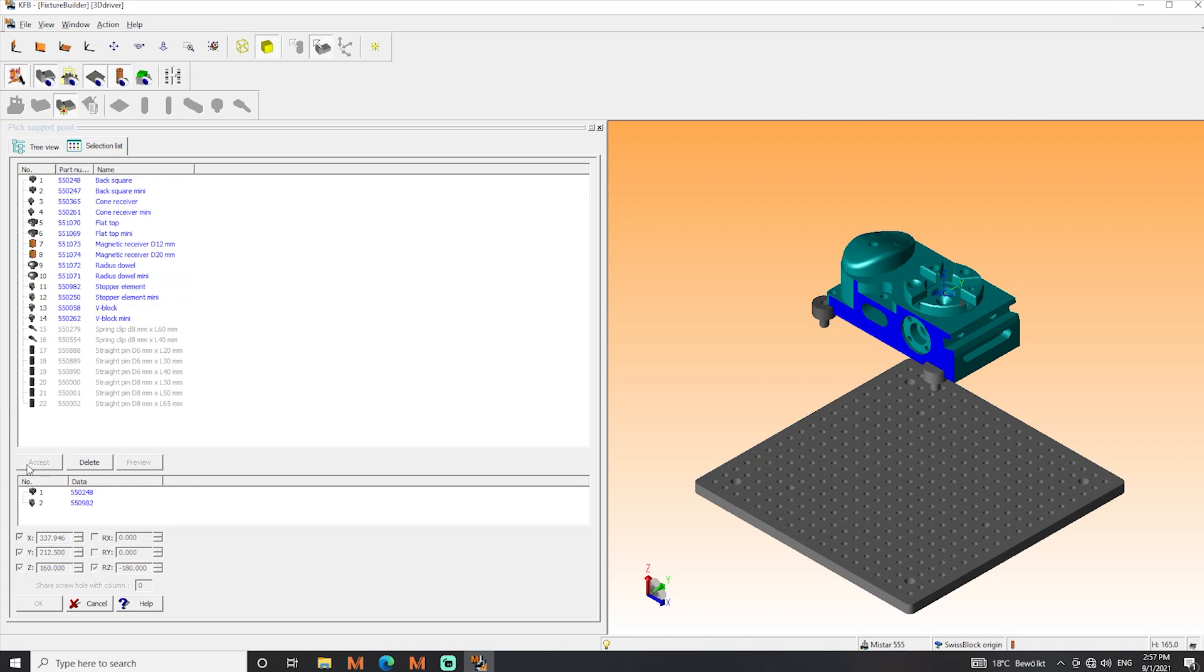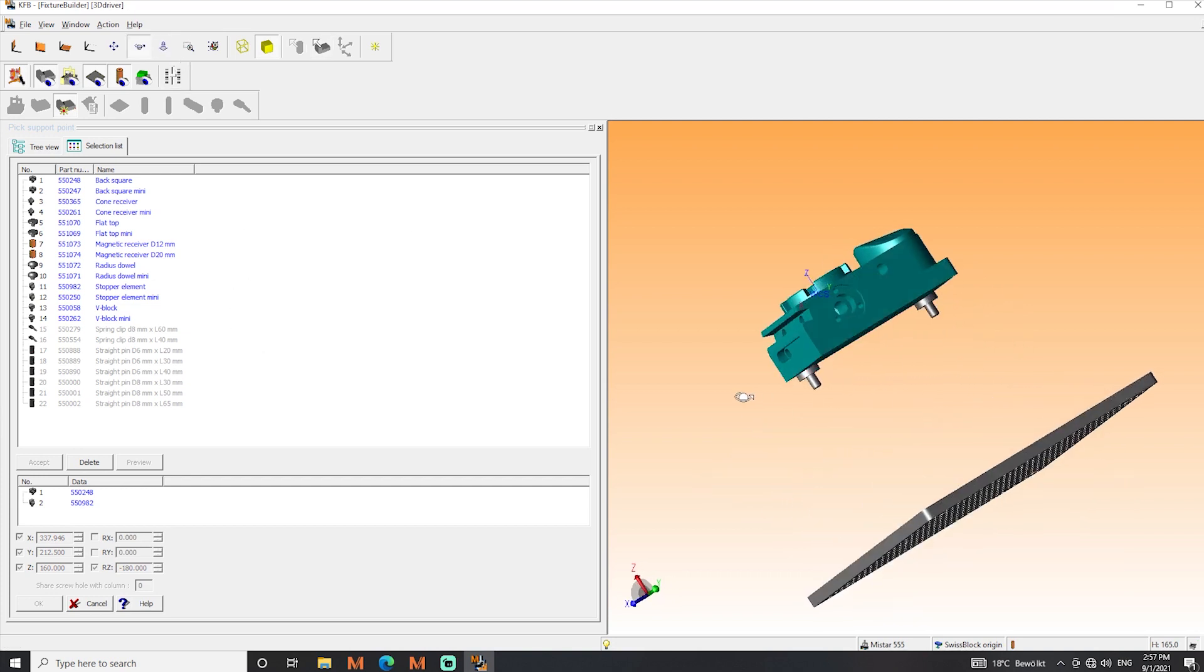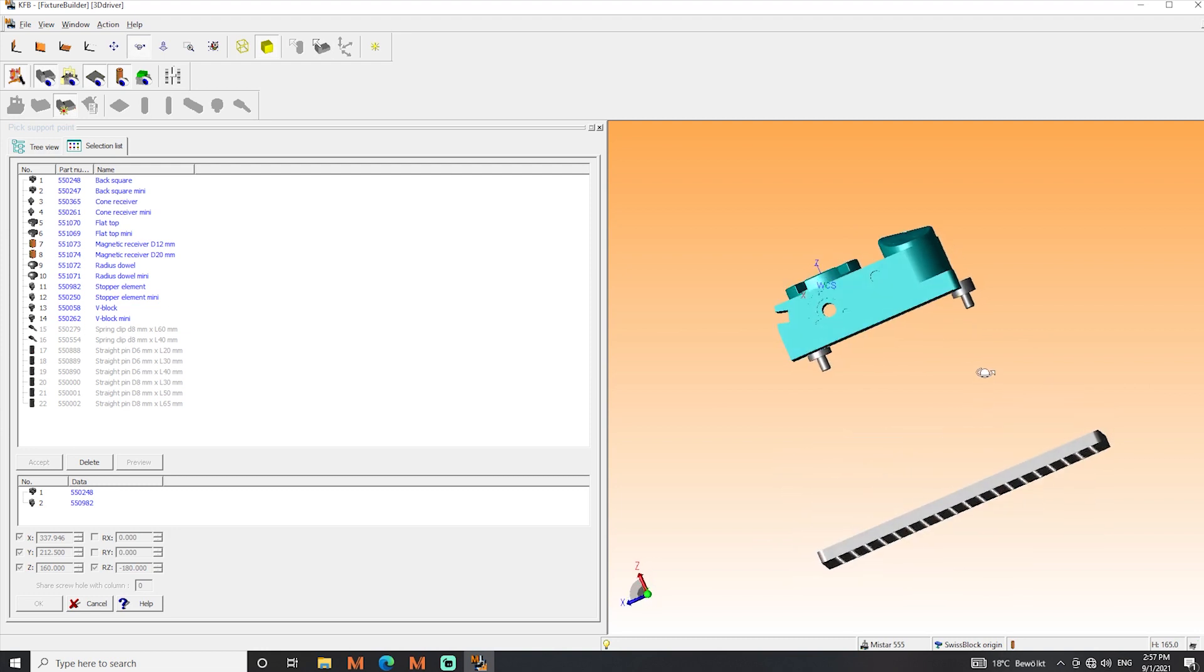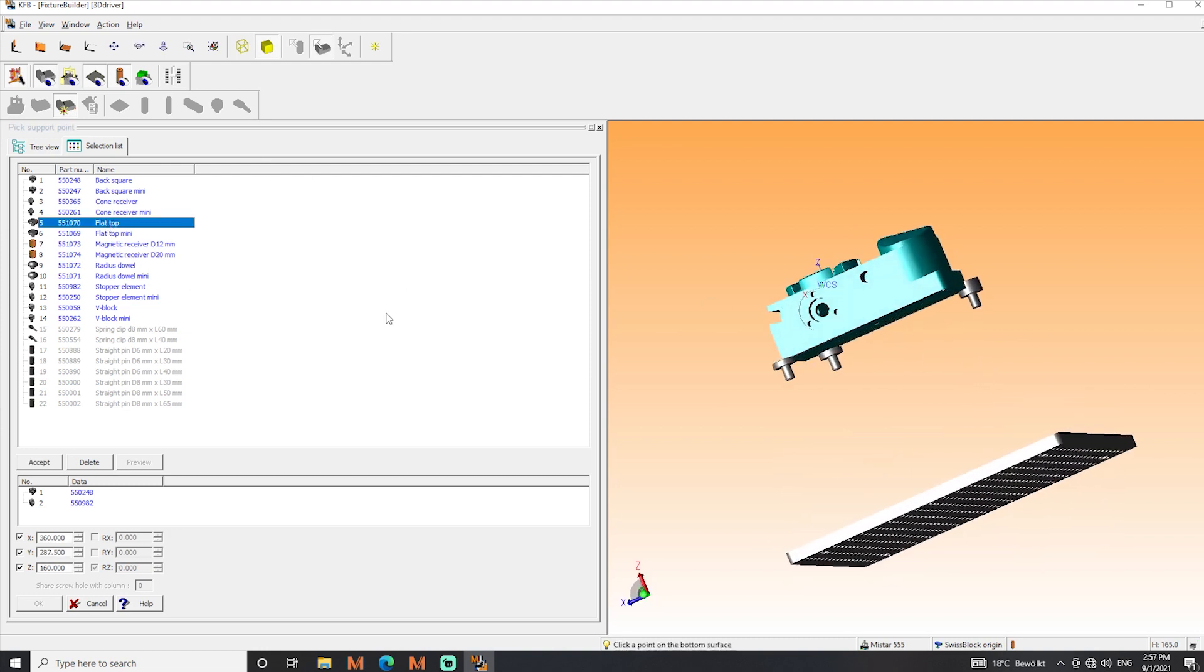At this point there are no columns visible. That will come later. For the setup of the third element we turn the part around so we can see the bottom side of it. Then we are placing a flat top and move it to the middle position. Again, don't forget to accept the positioning.